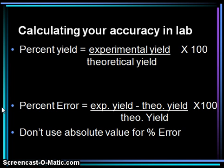Calculating your accuracy in lab. We use a couple of different things. One is percent yield — in an experiment where we're producing a product, we experimentally figure out how much we yielded in a reaction and divide this by the theoretical yield, the amount we should have been able to make. Experimental divided by theoretical, multiplied by 100, gives us percent yield. Percent error is our experimental yield minus the theoretical yield, divided by the theoretical yield, multiplied by 100.